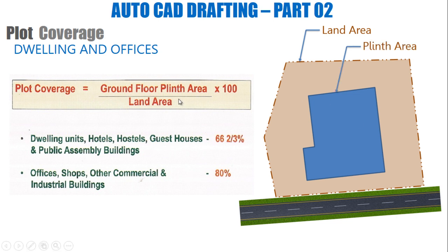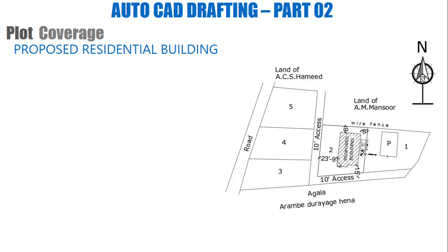The equation gives the percentage of the plinth area relative to the land area. If the building is a dwelling unit — like hotels, hostels, guest houses, and public assembly buildings — the maximum plot coverage is 66.67%. If it is an office, shop, or other commercial and industrial building, the plinth area can be up to 80% of the land area — not more than that.